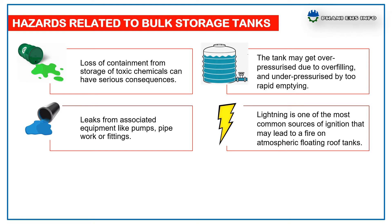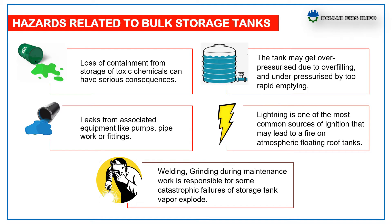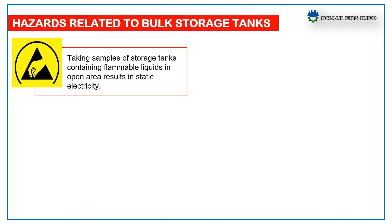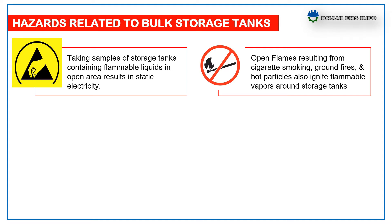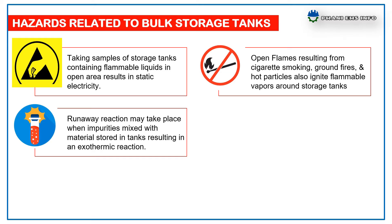Lightning is one of the most common sources of ignition that may lead to fire on atmospheric floating roof tanks. Maintenance work errors like welding and grinding during maintenance work are responsible for some catastrophic failures of storage. Taking samples of storage tanks containing flammable liquids in open areas results in static electricity, leak and line rupture. Open flames resulting from cigarette smoking, ground pipes and hot particles also ignite flammable vapour around storage tanks.